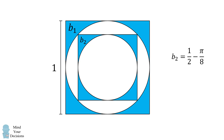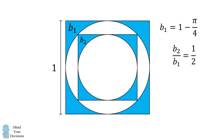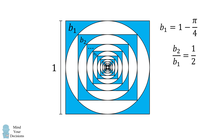Let's compare b1 and b2. Notice that b2 is exactly equal to half of b1, so b2 over b1 equals 1/2. By a very similar calculation, we can show that each subsequent blue area is exactly 1/2 of the previous blue area. In other words, b(k+1) divided by bk equals 1/2, so we have a common ratio of 1/2 between the areas.